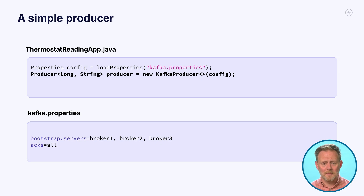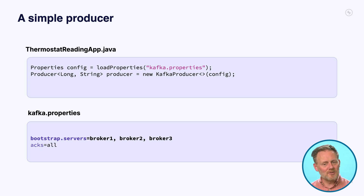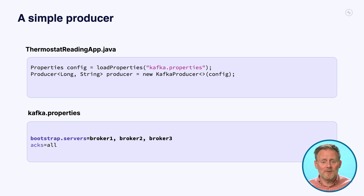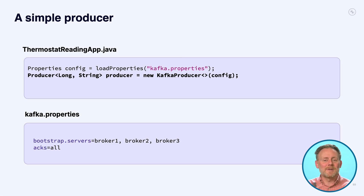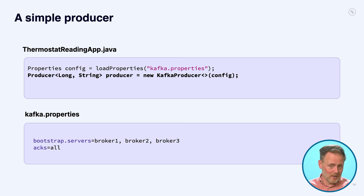For configuration parameters, you give the producer class a map of key-value pairs. We're doing that with a properties file. It has the bootstrap servers and the acks settings. The bootstrap servers list points the producer to the cluster — that's a list of some of the brokers, two or three. The cluster could have 50 brokers; you don't want to list all of them. Listing a few gives it a chance to connect to at least one. If the first is down but the second is up, it gets the metadata back it needs, and the client library can build connection pools and manage all the network stuff appropriately.